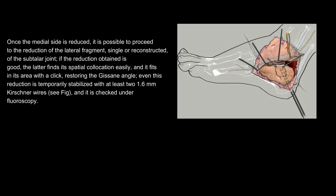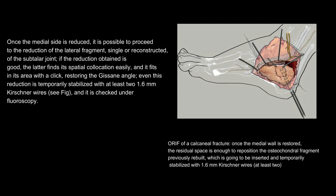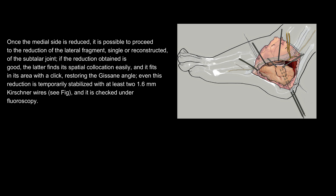This reduction is temporarily stabilized with at least two 1.6 mm Kirschner wires and checked under fluoroscopy. ORIF of a calcaneal fracture: once the medial wall is restored, the residual space is enough to reposition the osteochondral fragment previously rebuilt, which is inserted and temporarily stabilized with at least two 1.6 mm Kirschner wires.